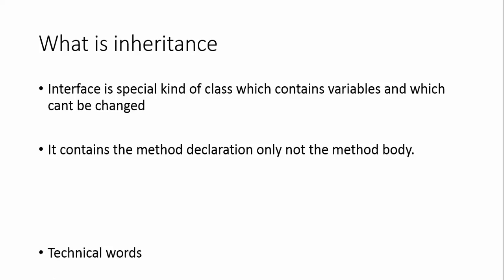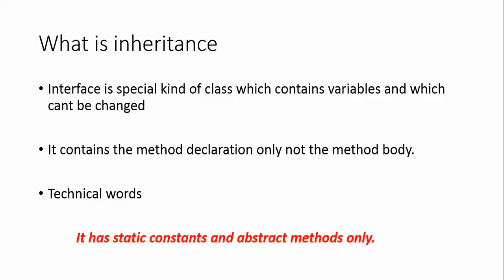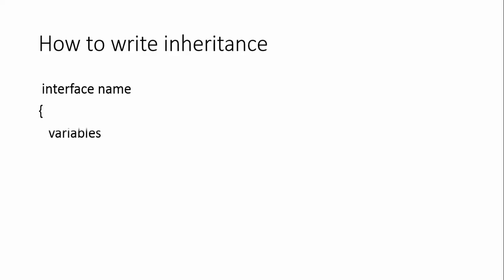In technical terms, an interface has static constant variables and abstract methods only. Once you write the program you will understand. An interface is a special kind of class which has only method declarations and no body. Whatever variables you create in an interface cannot have their values changed, because they are final static constants by nature.